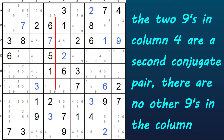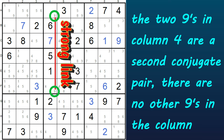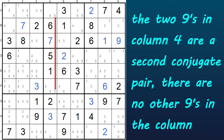Here's the second conjugate pair of 9s. This time it's in the column — column 4. And again, these two 9s are strongly linked. They are the only 9s in column 4, and they cannot both be true and they cannot both be false. One of them has to be true and the other false.